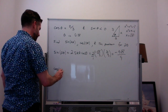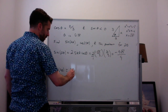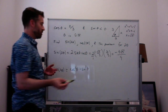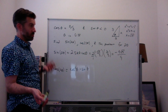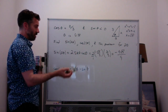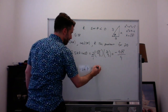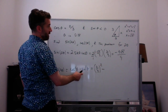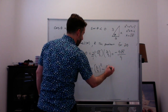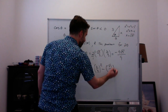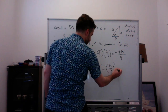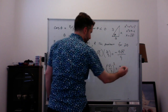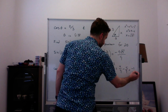For cosine of 2 theta, I always use the formula cosine squared theta minus sine squared theta. You could also use the alternative formula 2 cosine squared theta minus 1, especially since cosine of theta is already given. Cosine of theta is two-thirds, so it's two-thirds squared, which is 4 over 9. Sine of theta is negative root 5 over 3, so that squared is 5 over 9. So cosine of 2 theta is 4 over 9 minus 5 over 9, which is negative 1 over 9.